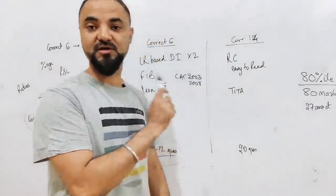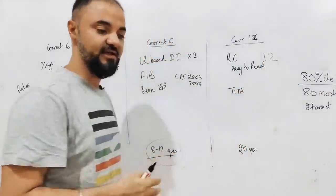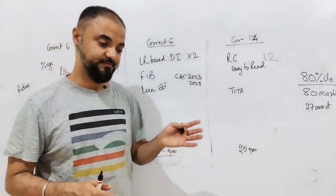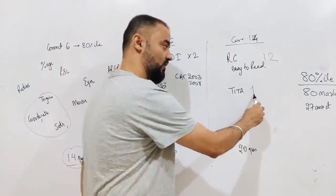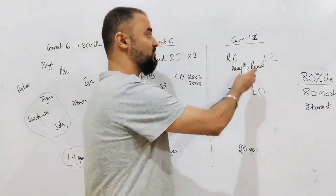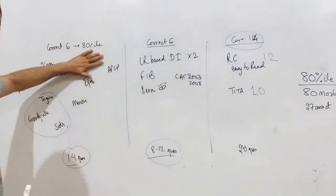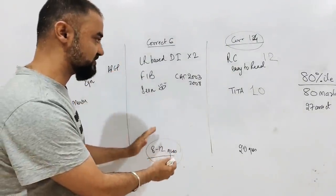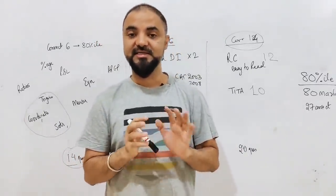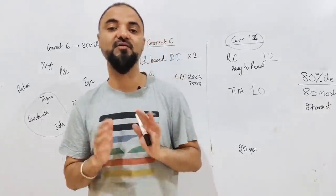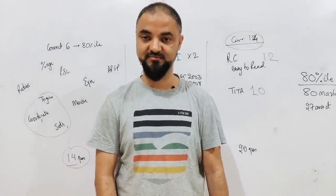The Verbal section is the main problem because the cutoff is around 14 questions right. There will be around 12 RC questions that are easy to read - science-based and business-based RCs are comparatively easier. So 20 to 22 questions is going to be my target, out of which I need 14 questions correct to get 80 percentile. At 80 percentile you can easily get a package of around 6 to 8 lakhs, and you will get a call from Band B colleges with an average package of 8 lakhs.